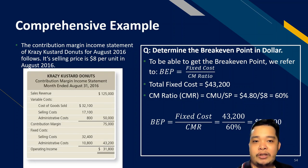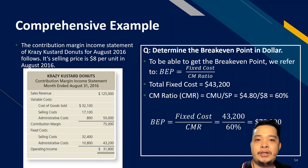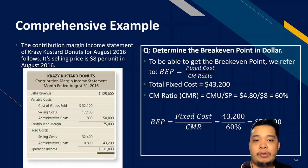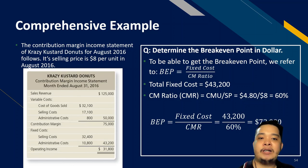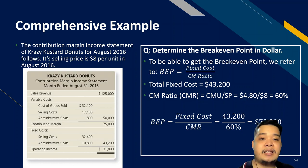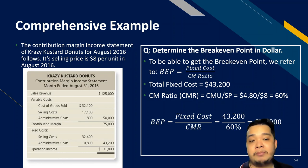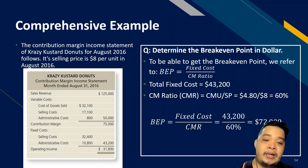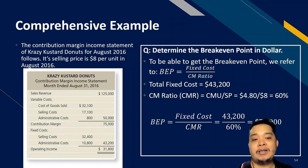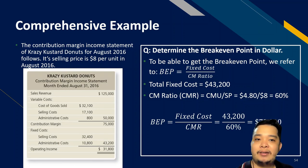The third question is: determine the break-even point in dollars using the CM ratio approach. Break-even sales equals fixed cost divided by CM ratio. Fixed cost is $43,200; CM ratio equals $4.80 divided by $8.00, which is 60%. Therefore, break-even sales equals $43,200 divided by 60%, giving a break-even sales figure of $72,000.